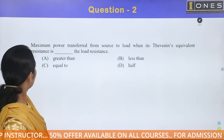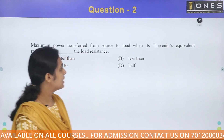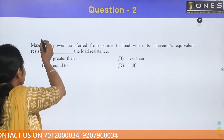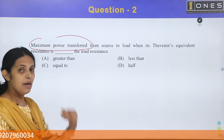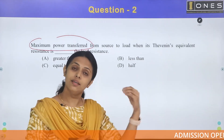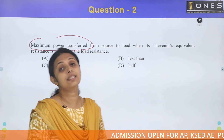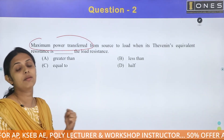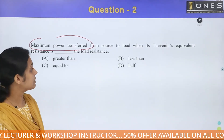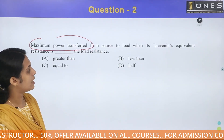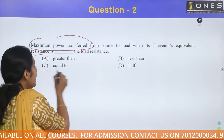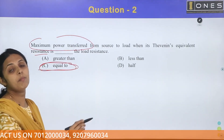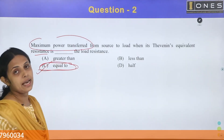Next question. Maximum power is transferred from source to load when Thevenin's equivalent resistance is equal to the load resistance. When load resistance equals source resistance, that is the condition for maximum power transfer. The correct answers are Option A and C — when Thevenin resistance equals the load resistance.